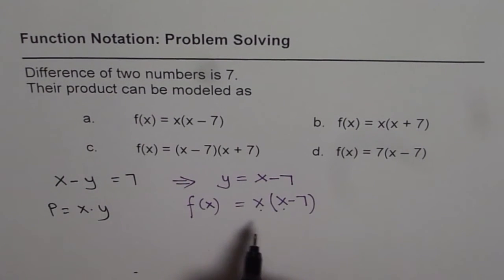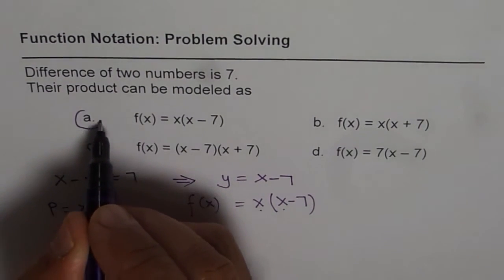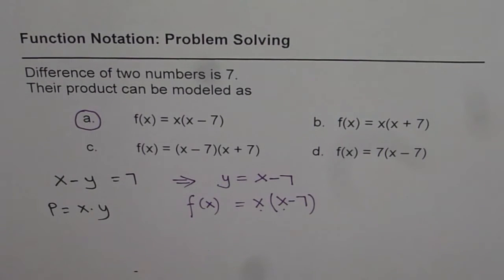You get the point. So that is how we develop equations using function notation. Amongst the options given to us, we do have x times x minus 7 as option A. So that is the right answer. I hope the steps are clear. We'll take one more example. And then we'll do some questions on this. Thank you and all the best.